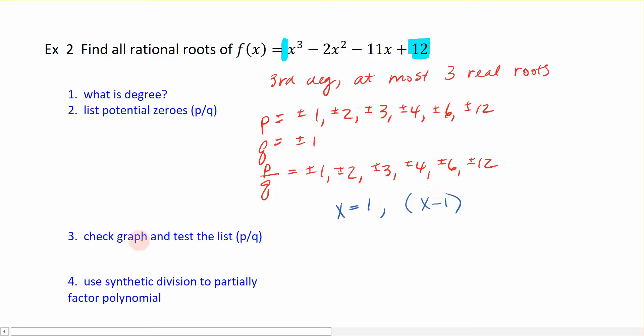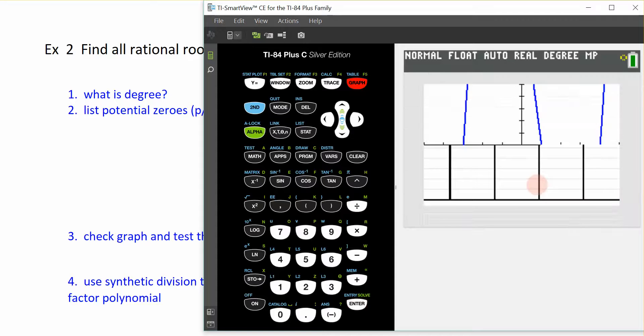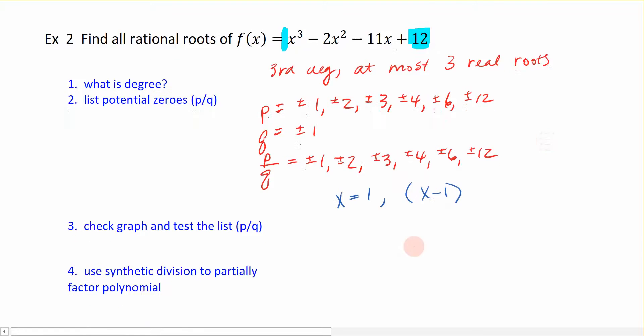So, that was the testing the list. We can check the graph if we want. I'm going to go back and show you what it does look like. So, here I have it graphed, and you can see that right here is where we are crossing the x-axis at one. So, I know it's a zero.